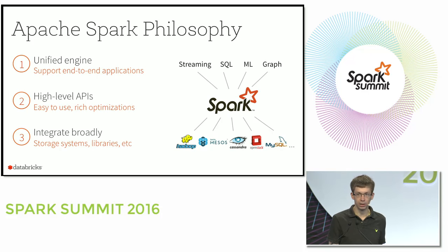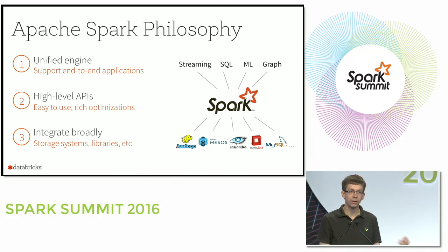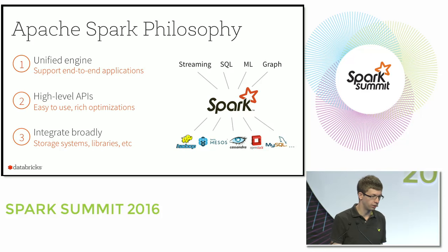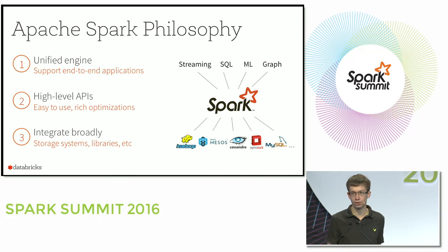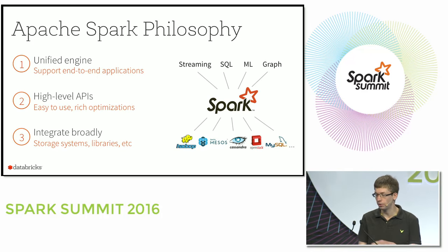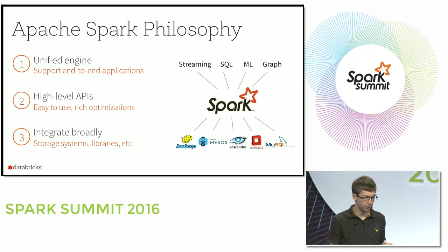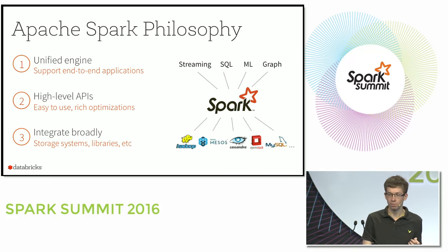The second theme is high-level APIs — we want a system that is easy to use. Having high-level APIs also enables rich optimizations, which we've been taking increasing advantage of lately. And finally, we designed Spark to integrate broadly with many other systems. It's agnostic to the storage system, so you can run it on data you have anywhere, which is very useful because data is spread out in many locations and is expensive to move. It integrates with many libraries and runs on many different cluster managers.